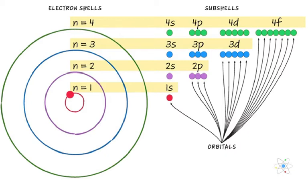Bohr's model was modified and three criteria were stated for atoms. First, electrons are able to move in certain discrete stable orbits without radiating energy. Second, orbits have angular momentum values that are integer multiples of the reduced Planck's constant. Third, electrons can only gain or lose very specific amounts of energy when jumping from one orbit to another in discrete steps.